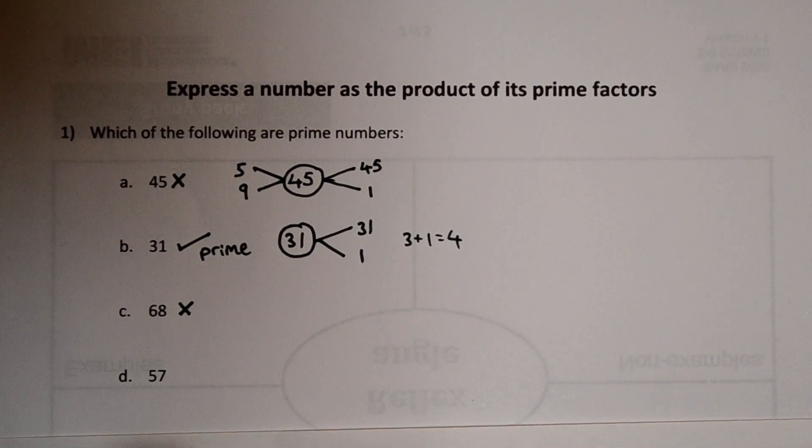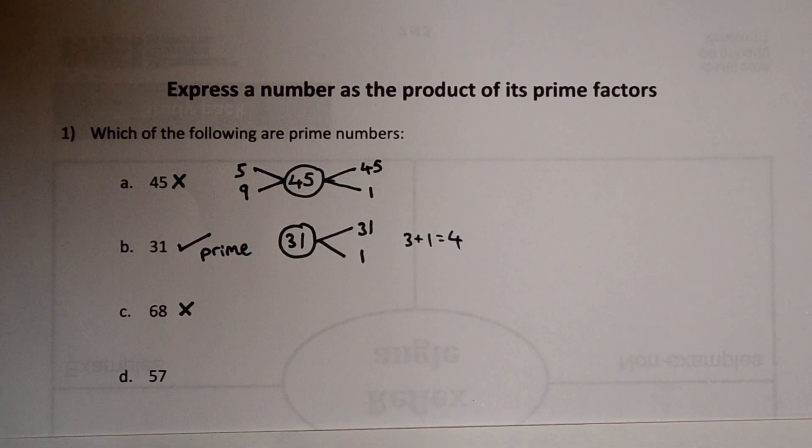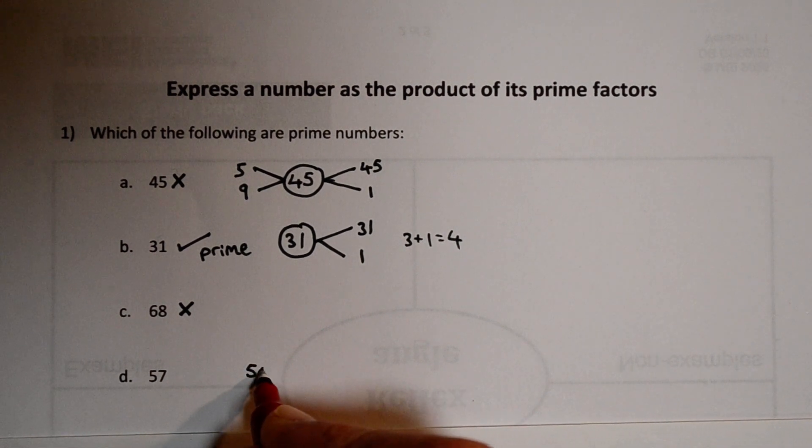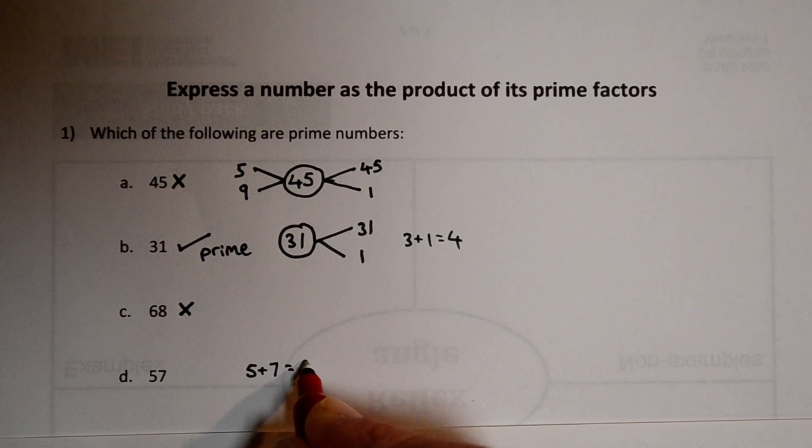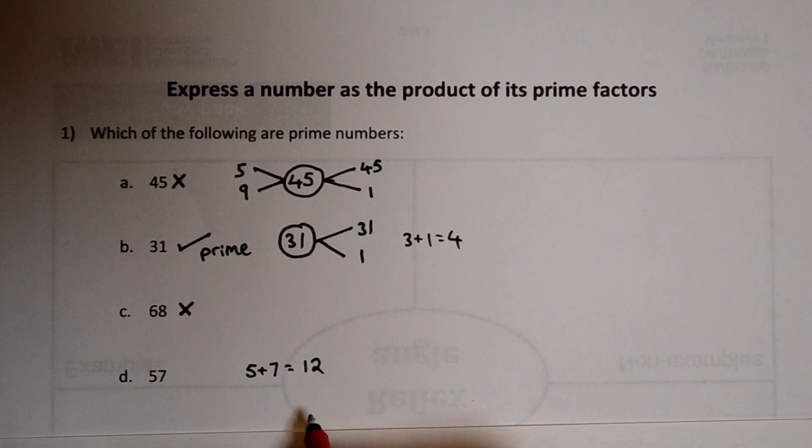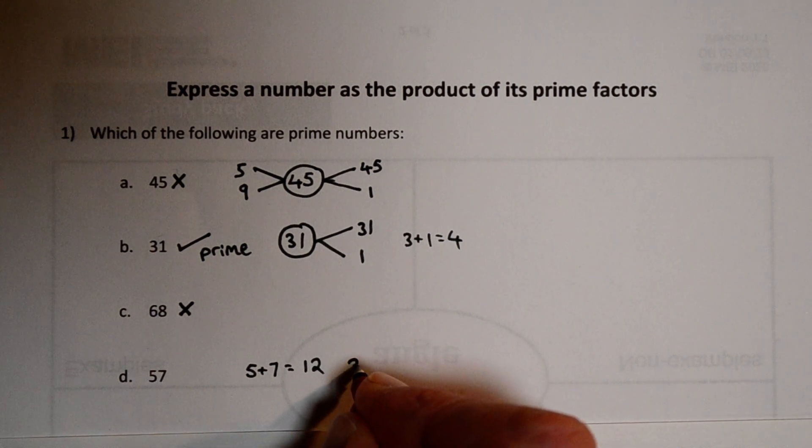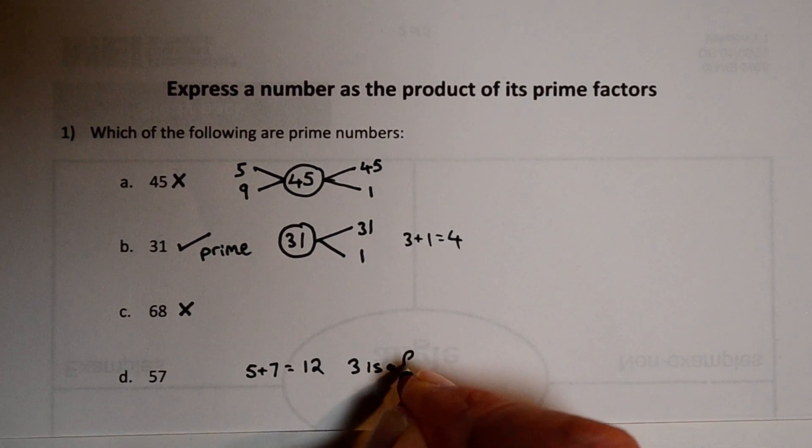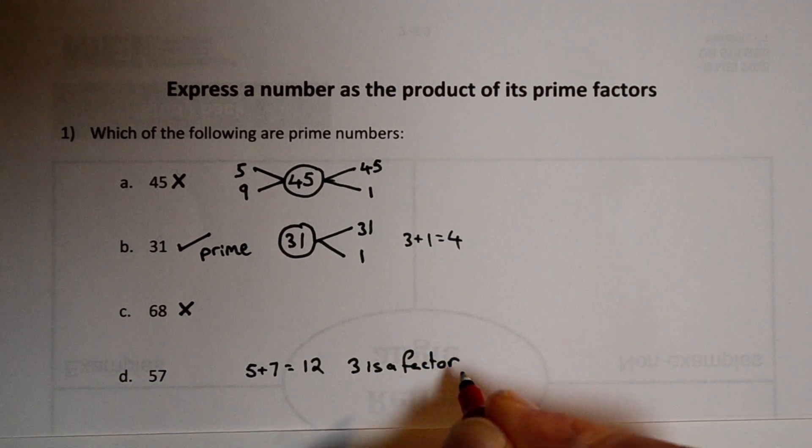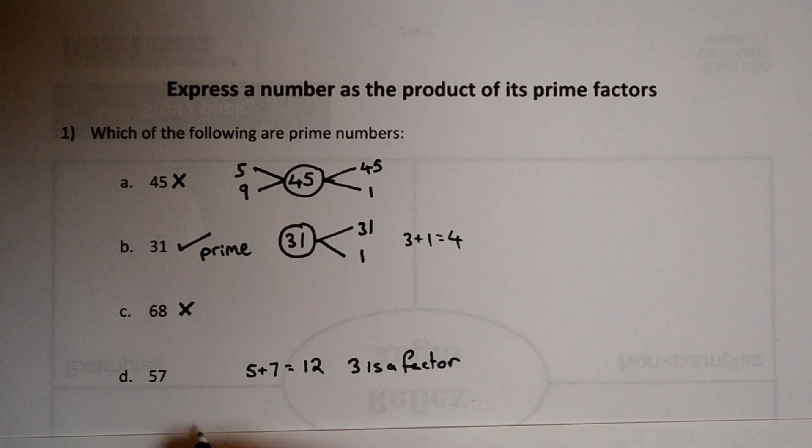It's got 1 and 57 but can we think of any more factors? Well it's not even so it doesn't divide by 2. 2 is not a factor but 3, what about 3? If we add the digits together gives us 12. That's a multiple of 3. So 3 is a factor. Because 3 is a factor we've got more than 2 factors. It's not a prime.